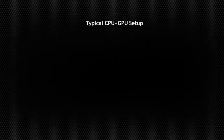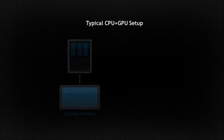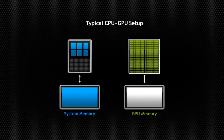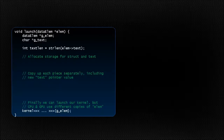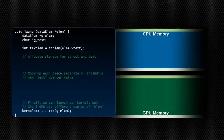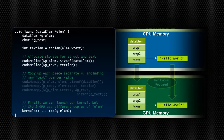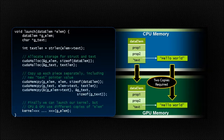In a typical PC or cluster node today, the memories of the CPU and GPU are physically distinct and separated by the PCI Express bus. Before Cuda6, that is exactly how the programmer has to view things. Data that is shared between the CPU and GPU must be allocated in both memories and explicitly copied between them by the program. This adds a lot of complexity to GPU programs.